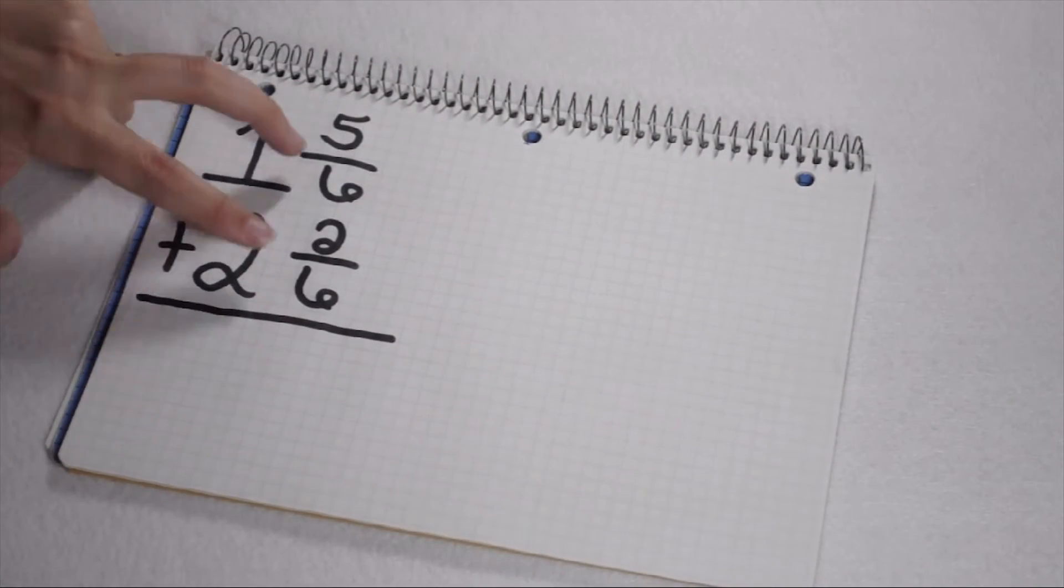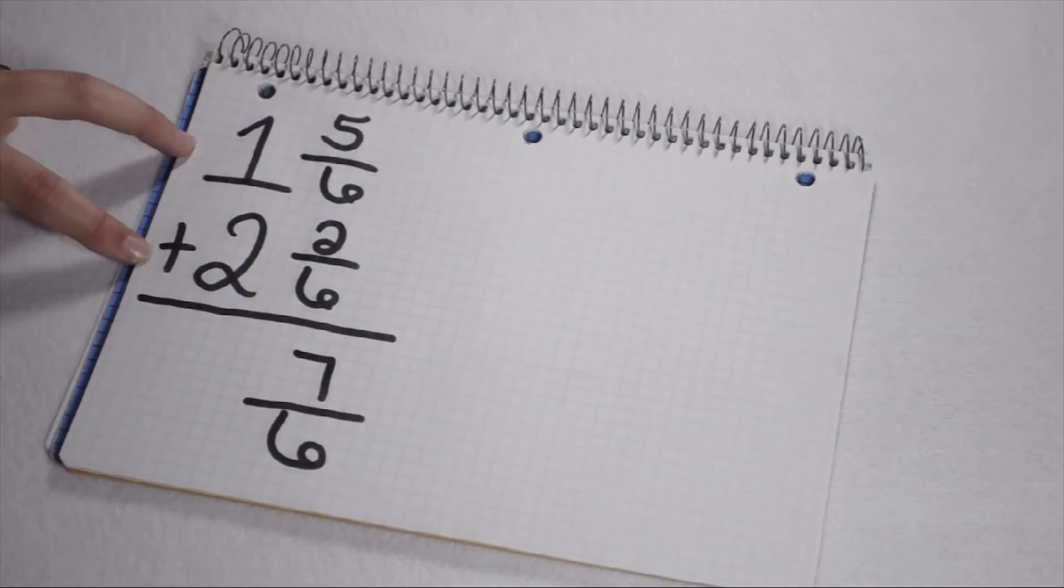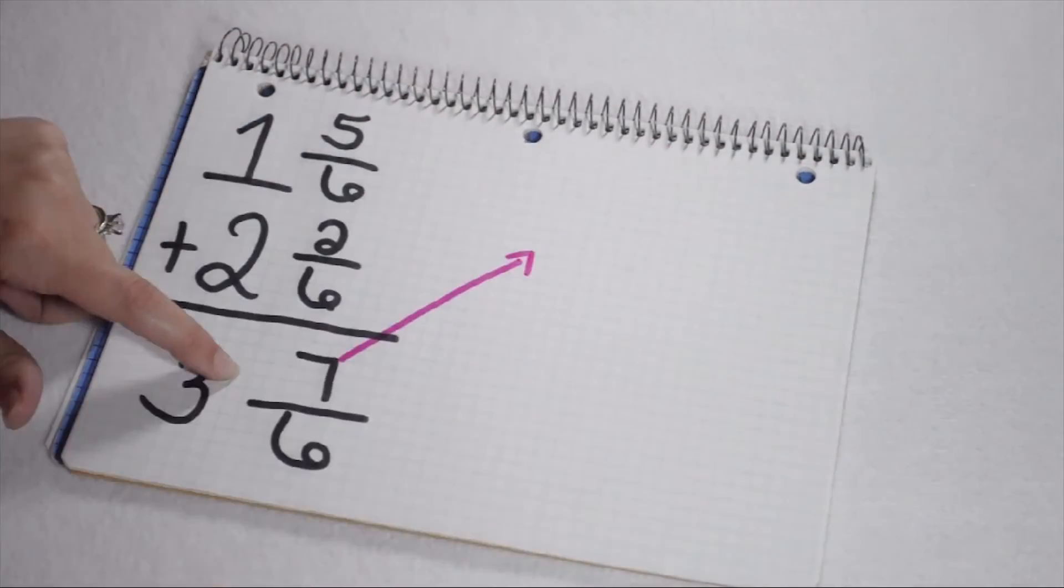So, we have 1 and 5 sixths plus 2 and 2 sixths. 5 plus 2 is 7. 2 plus 1 can give me 3. 7 sixths is its own improper fraction.